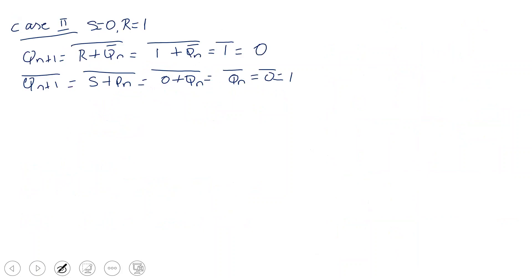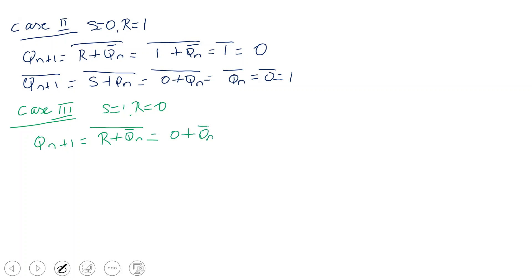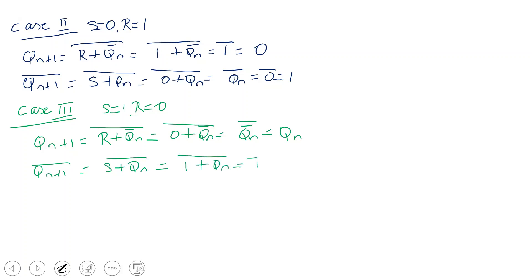Case 3: S=1 and R=0. QN+1 = (R + QN bar) whole bar = (0 + QN bar) whole bar = QN double bar = QN... wait — QN+1 bar = (S + QN) whole bar = (1 + QN bar) whole bar. Since 1 plus anything is 1 bar = 0, so QN+1 bar = 0, which means QN+1 = 1. Setting the latch.